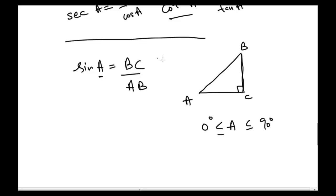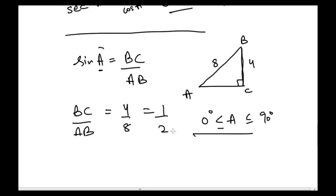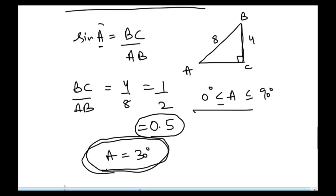If we increase or decrease angle A, the ratio BC to AB also changes. So for any particular value of that ratio, angle A is constant. For example, if BC = 4 and AB = 8, the ratio is 4/8 = 0.5, which corresponds to angle A = 30 degrees. These values have already been established and can be verified with a calculator.